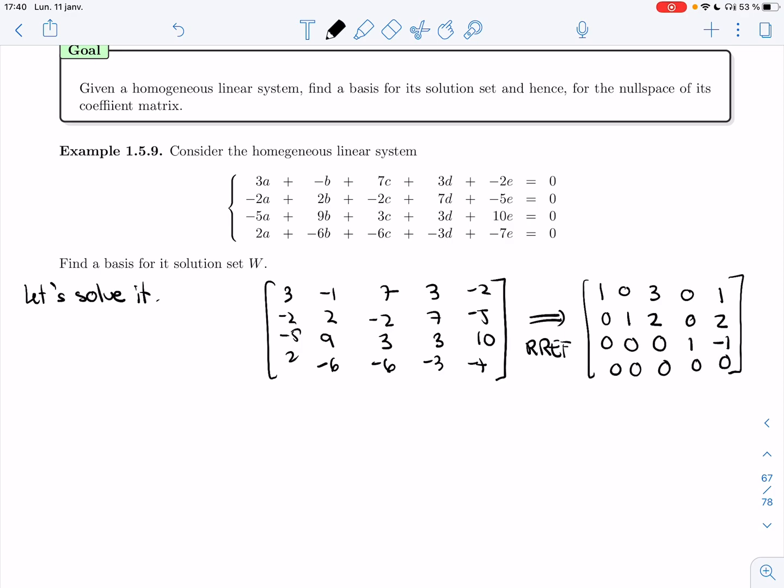And so I end up with two free variables. Let's call this one s and this one t. So c is free and e is free.